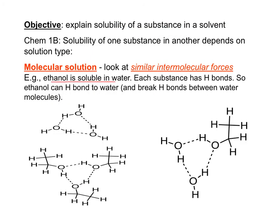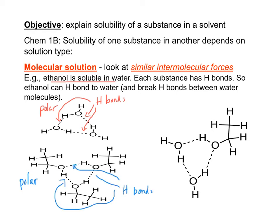Ethanol is soluble in water. Structure and shape tell us water is polar, so the intermolecular forces between water molecules are London forces, dipole-dipole forces, and hydrogen bonds. Ethanol is also a polar molecule with the same intermolecular forces. Ethanol is soluble in water because ethanol can break the hydrogen bonds between water molecules and form hydrogen bonds to water molecules.